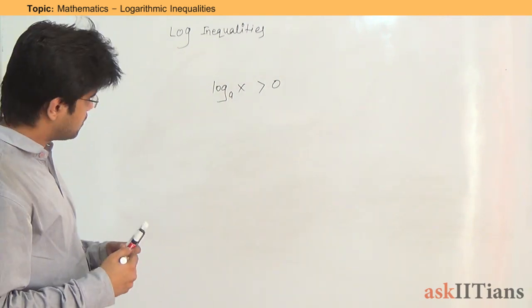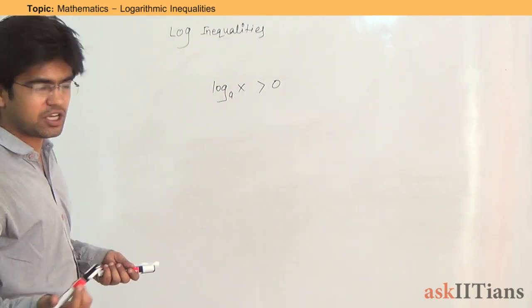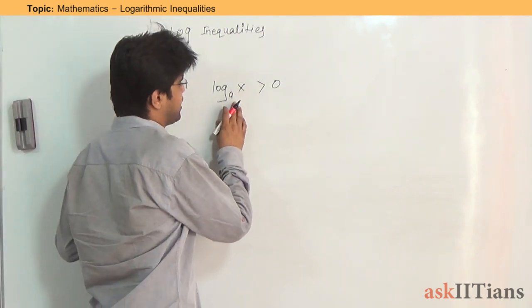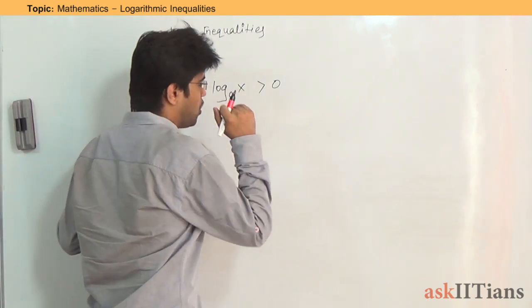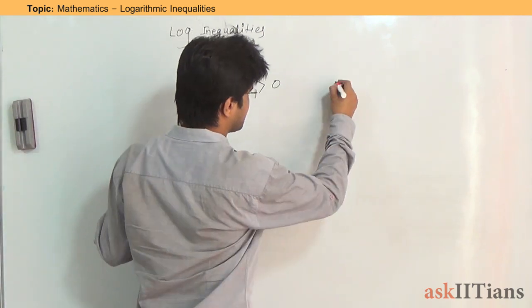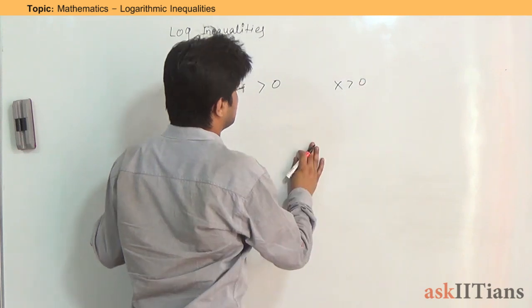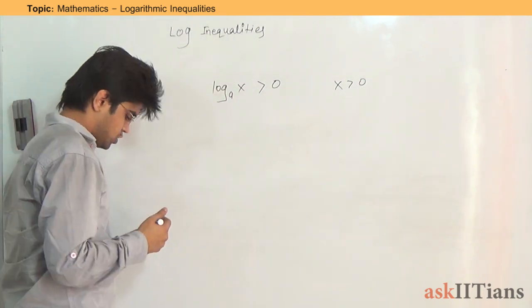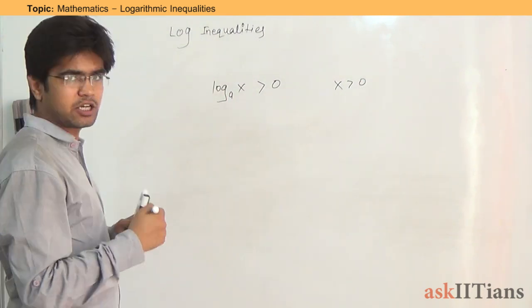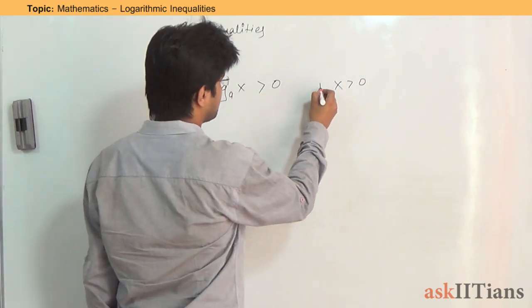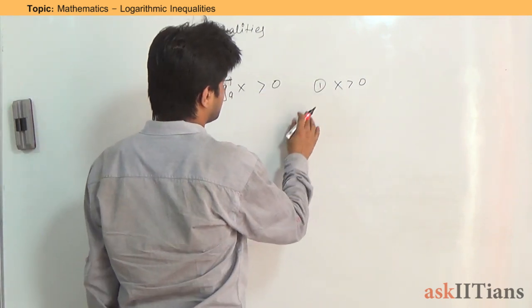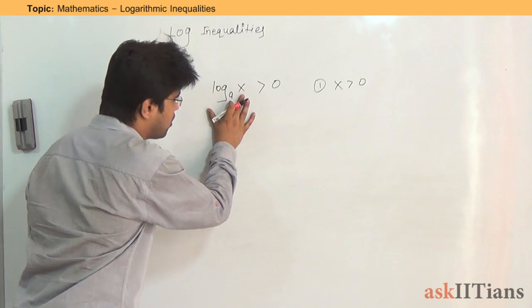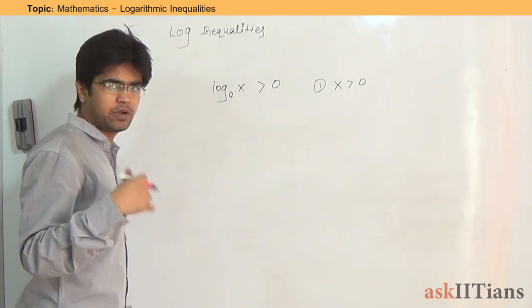Now there is a catch here. The catch depends on the value of the base. The first condition is that x has to be greater than zero — not even equal to zero. Whatever is inside the log has to be greater than zero. This is the first condition.